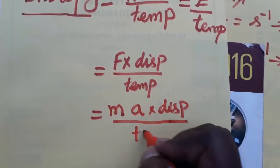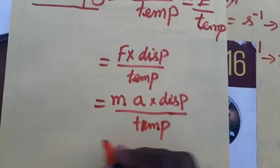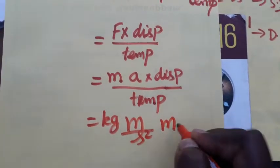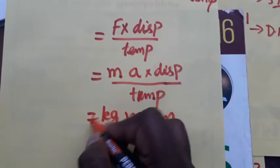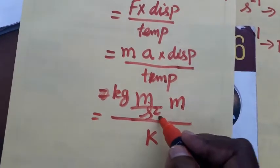This is the actual formula for entropy. Mass is kg, acceleration is meter by second square, displacement is meter, and temperature is kelvin. So meter meter meter square, and the second I am taken as numerator second minus two.